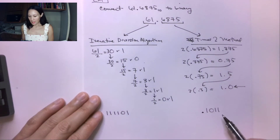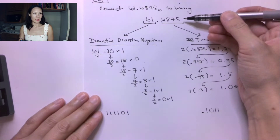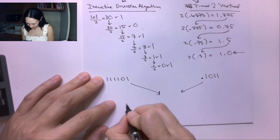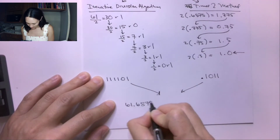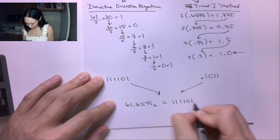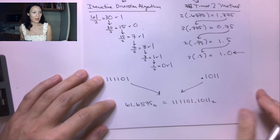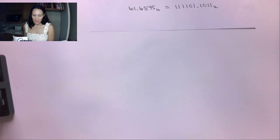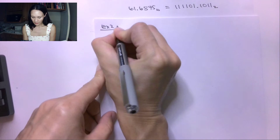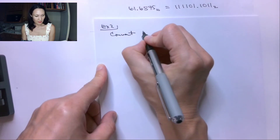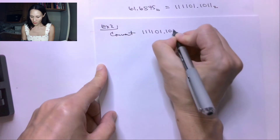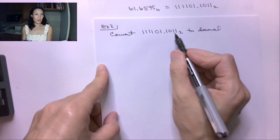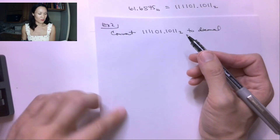So 0.1011 is the binary conversion of decimal 0.6875. We just put these two parts back together and get that 61.6875 in decimal is equivalent to 111101.1011 in binary. Now let's see an example going the other direction. For example 2, let's convert 111101.1011 from binary to decimal — this is the same result we just got, so let's verify we end up with 61.6875 to check our work.